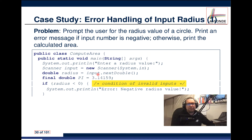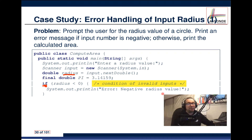We ask a question using an if statement: is the radius provided by the user less than zero? We want to find out if they've given us a negative number, which is invalid. If they have, we print to the screen 'Error: a negative radius value.' Users might have done it by accident, so we want to give them feedback.